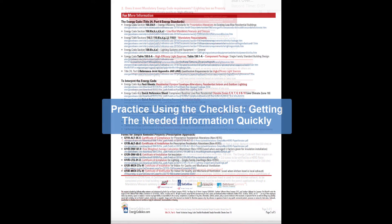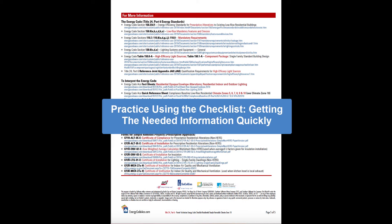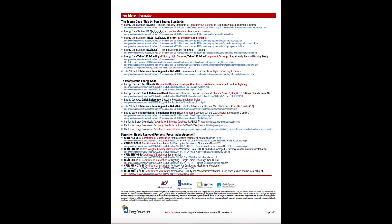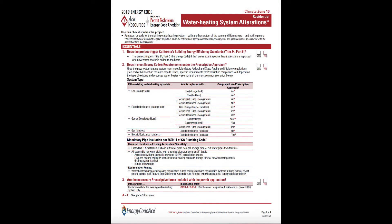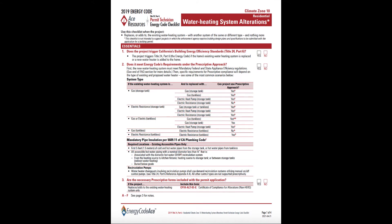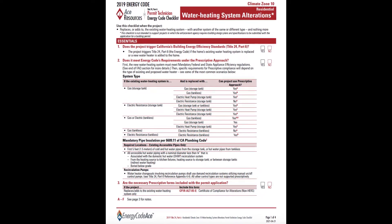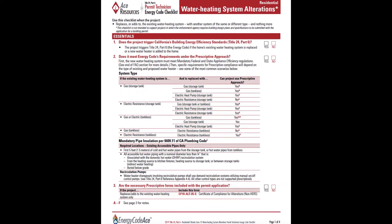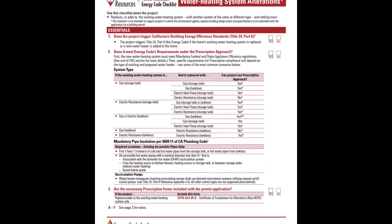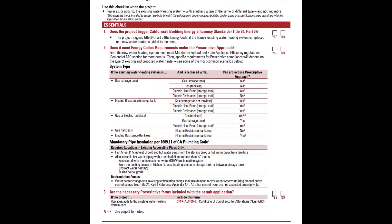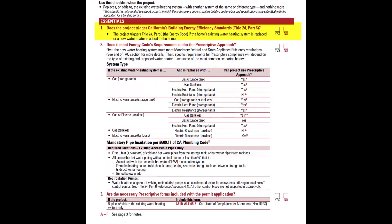Now that you've seen how these checklists are structured, let's practice using them for quick reference during application intake. We'll use the water heating checklist and return to the high-level summary on page 1. A permit applicant is looking to replace her old water heater with a new one — this is the only change she is making in her home. We'll zoom in to look at part 1 of this page.